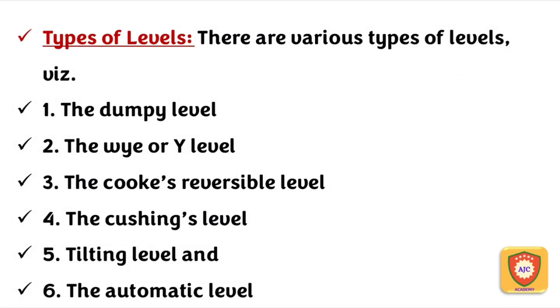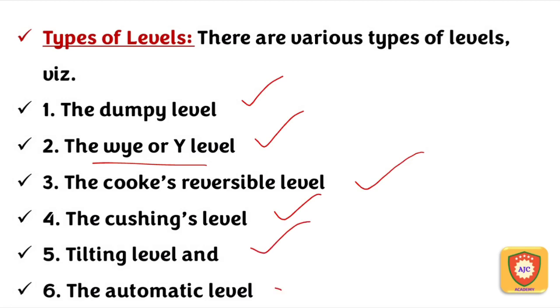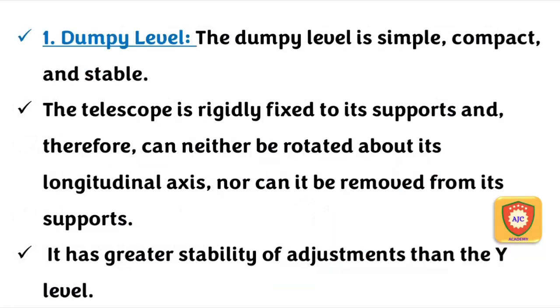The six types of levels are: Dumpy Level, Y Level, Cooke's Reversible Level, Cushing's Level, Tilting Level, and Automatic Level. We will talk about all six types of levels in this class.